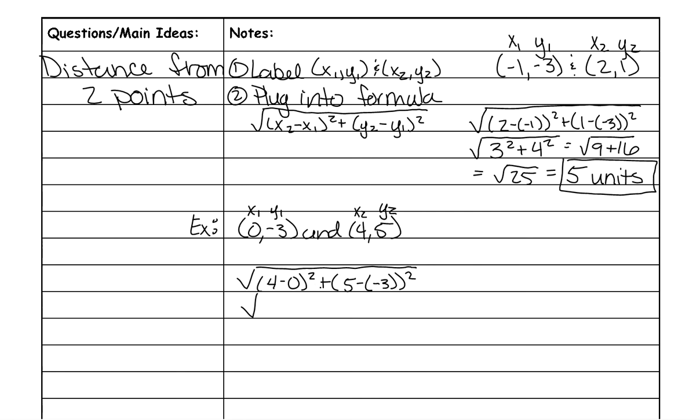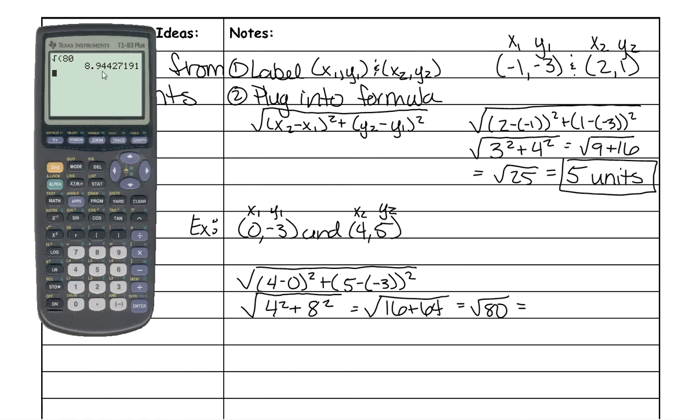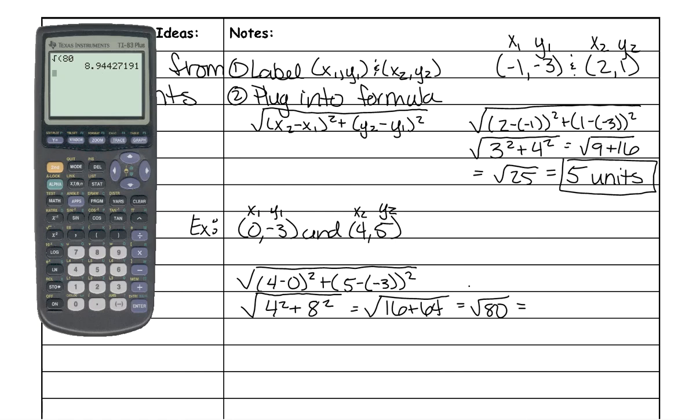Again, this is just finding how long my legs are. So 4 minus 0 was 4. And 5 minus the negative 3 is 8. And if you remember from the graph, my legs were 4 and 8. 4 squared is 16. 8 squared is 64. 16 plus 64 is 80. And when we take the square root using our calculator, we find that it's 8.94 units. Just like it was before.